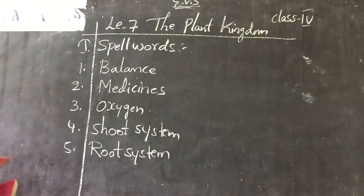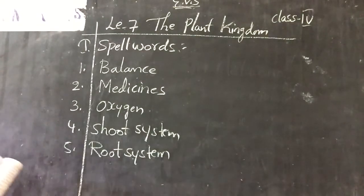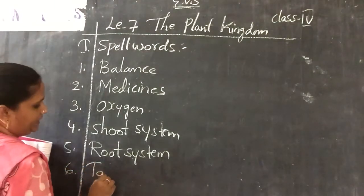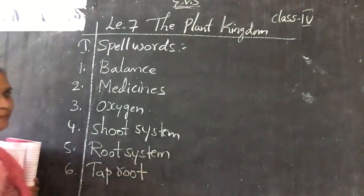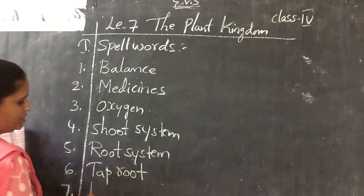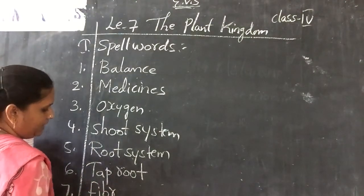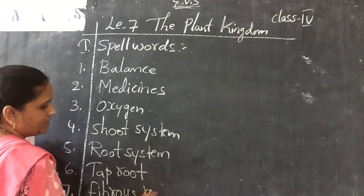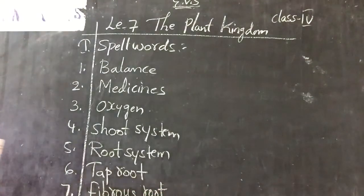Sixth one: tap root — T-A-P, tap; R-O-O-T, root — tap root. Seventh one: fibrous root — F-I-B-R-O-U-S, fibrous; R-O-O-T, root — fibrous root.